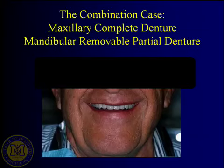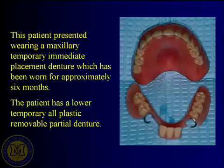Does it ever happen that a patient has an upper partial denture and a lower complete denture? Though not common, that situation does rarely occur, but it's very uncommon for a person to still have significant numbers of maxillary teeth and no lower teeth. So most of our discussion will assume the patient needs a maxillary complete denture and a mandibular removable partial denture. The patient we're discussing today has already received a maxillary immediate placement stay plate — a temporary denture immediately placed in the upper arch, which was last week's topic.